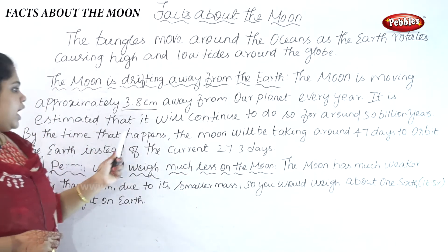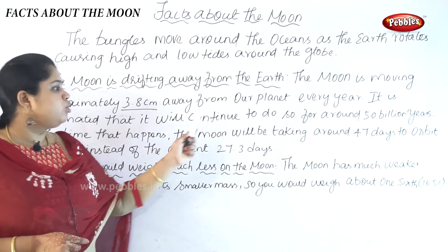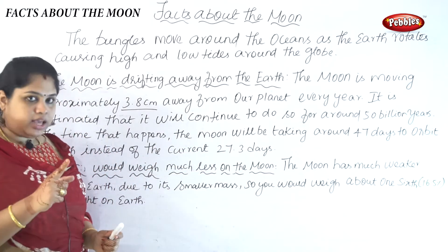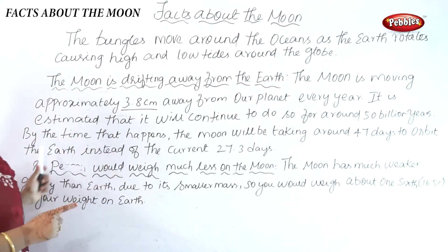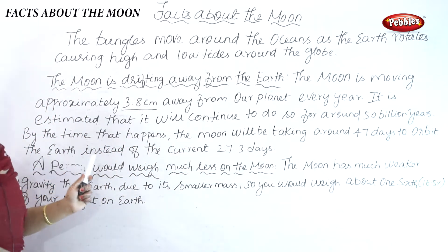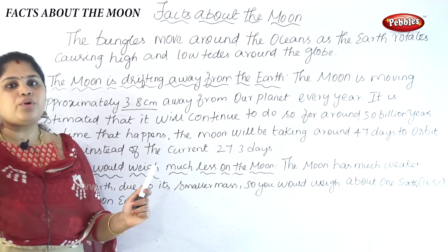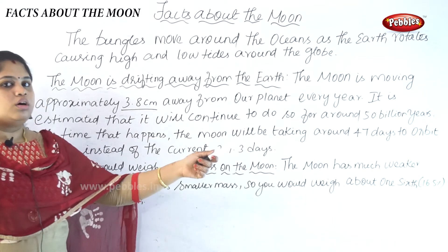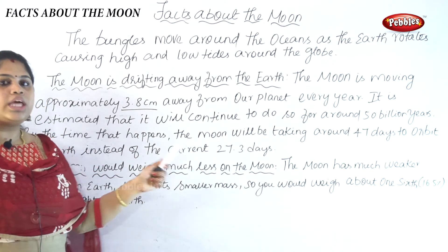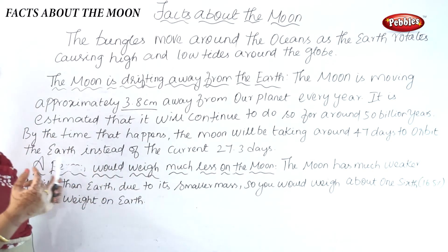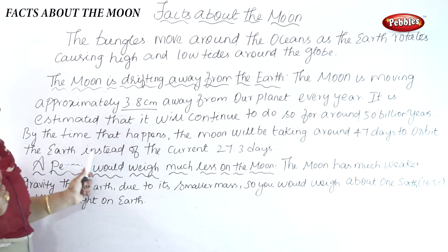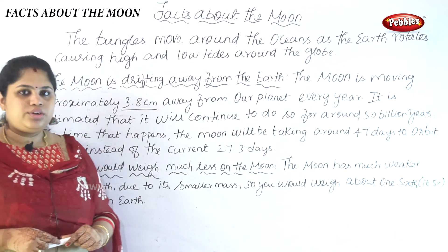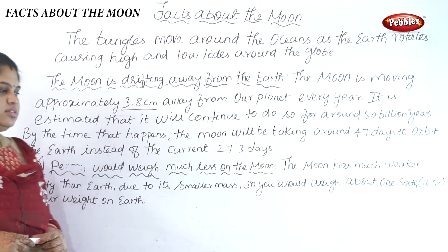So by that time, the moon will take 47 days to orbit the earth, instead of the current 27.3 days.